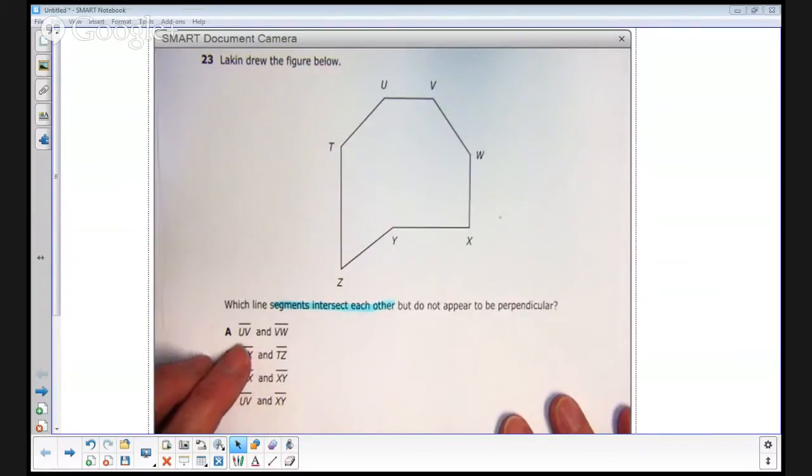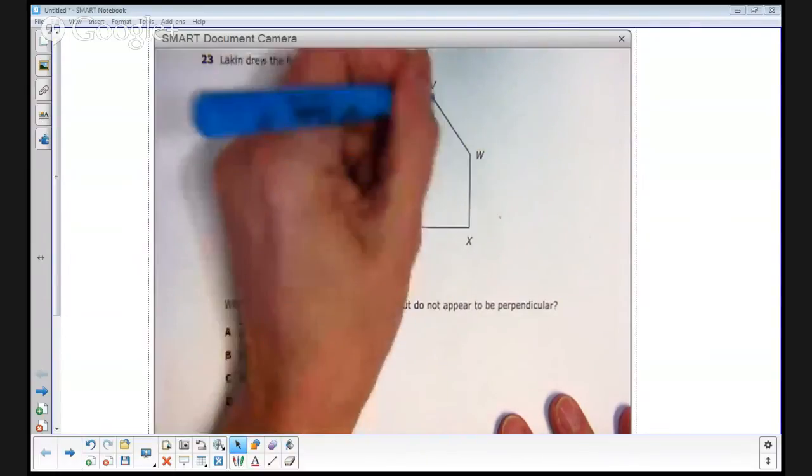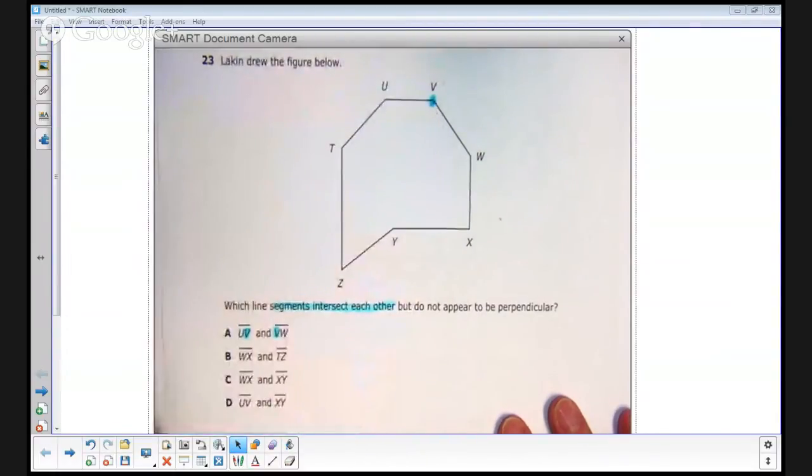We'll start with answer choice A. We're given segment UV and VW. You will notice that UV and VW both contain the letter V in their name, and UV and VW intersect at point V.